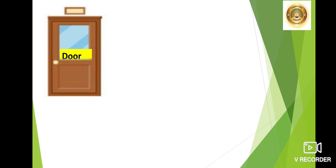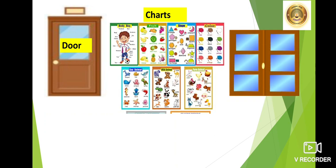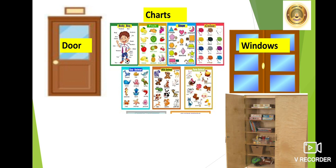Now how you enter your classroom? With the help of the door. Now this is a door in the classroom. Now what are these? These are the charts on the sub boards which the teacher puts of different topics. So these are the charts. Now what are these? These are the windows from which fresh air and light come in the classroom. There is a cupboard in the classroom to keep your things and other material of the teacher. So this is a cupboard.